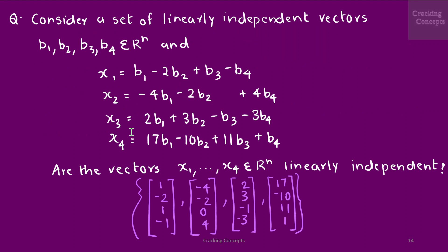Now we'll consider a set of linearly independent vectors b1, b2, b3, b4 and check whether the vectors x1, x2, x3, and x4 are linearly independent.